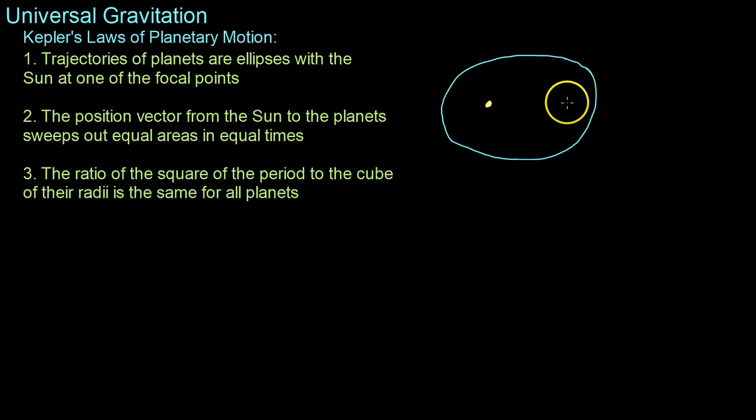Now each ellipse has two points, or two focal points, one here and one thereabout there, and the Sun is always at one of these two focal points in a planet's ellipse.